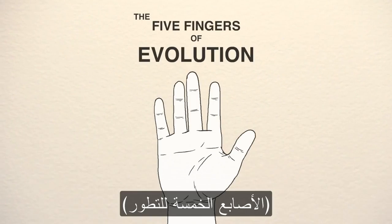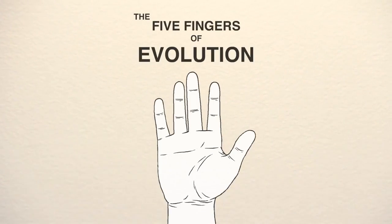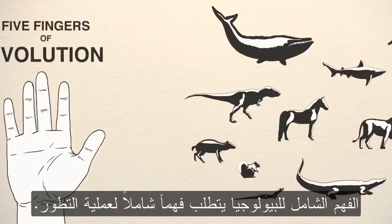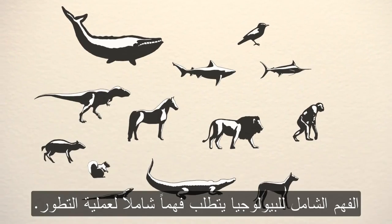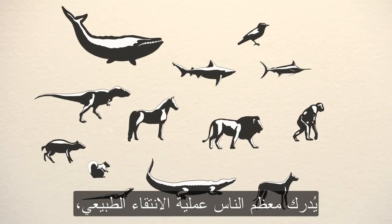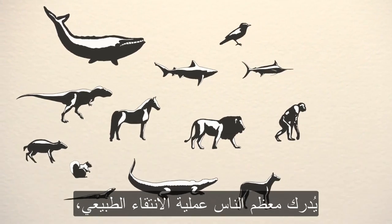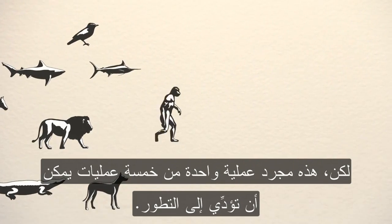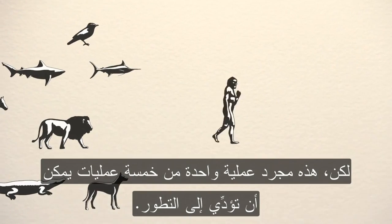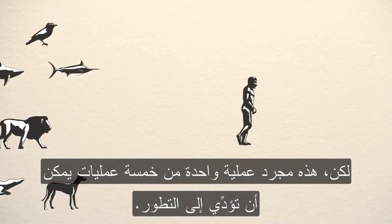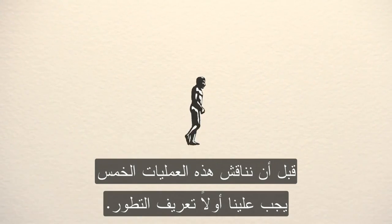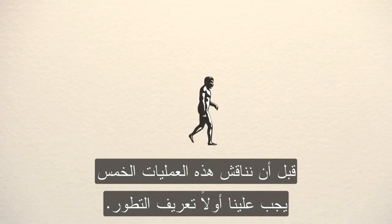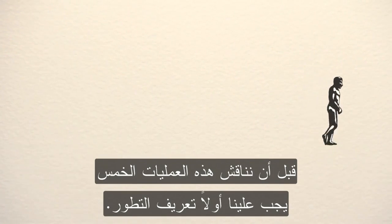The five fingers of evolution. A thorough understanding of biology requires a thorough understanding of the process of evolution. Most people are familiar with the process of natural selection. However, this is just one of five processes that can result in evolution. Before we discuss all five of these processes, we should define evolution.